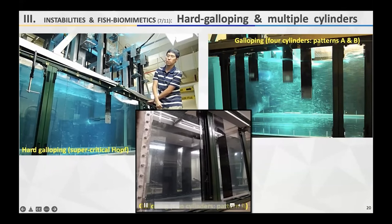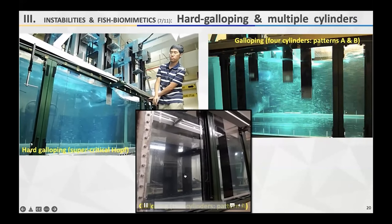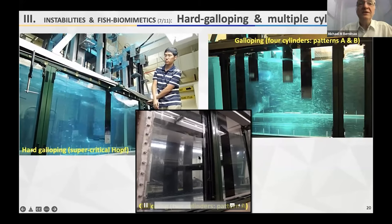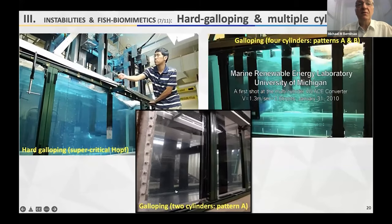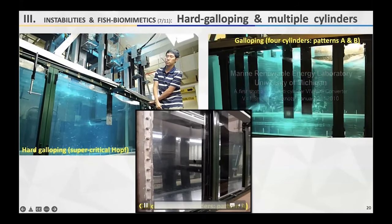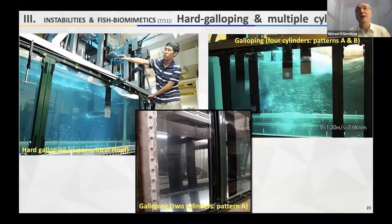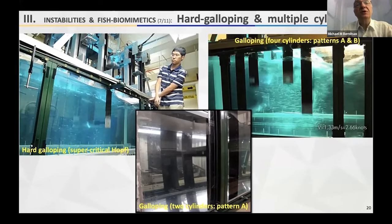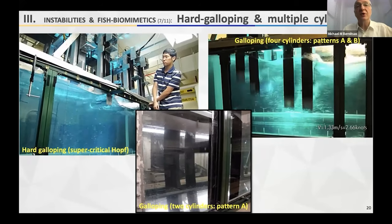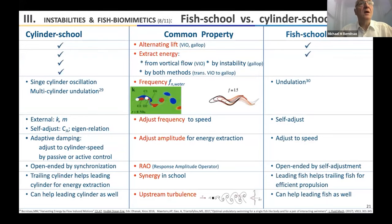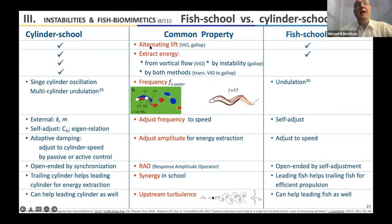Another important issue is what happens with multiple cylinders when one is in the wake of another. With two cylinders or four cylinders, it is actually possible to make them extract more energy when working close together in synergy than when isolated and far apart. This relates to how cylinders share the alternating lift — analogous to how fish schools and cylinder schools both exhibit energy transfer through vorticity interaction.